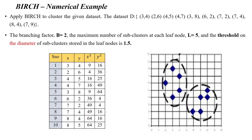Welcome to the BIRCH clustering numerical example. Here, the Balanced Iterative Reducing and Clustering using Hierarchies is applied to cluster a given dataset using a clustering features tree structure. There are 10 data points with x and y coordinates, and only numerical data points are used. The branching factor for the parent is 2, the number of entries for each leaf node is 5, and the threshold value for the diameter of a subcluster is 1.5 for the leaf nodes. The data points are represented in the given plot.